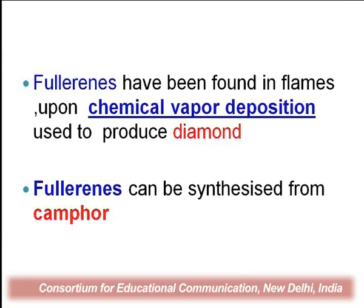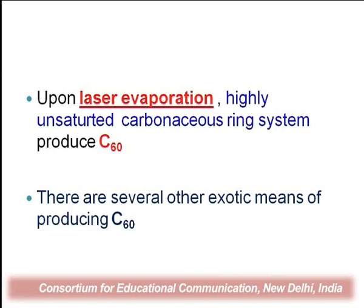Fullerenes have been found in flames and upon the chemical vapor deposition method used to produce diamond. From fullerenes we can produce materials using chemical vapor deposition. Fullerenes can also be synthesized from camphor. Laser evaporation of highly unsaturated carbon ring systems produces C80, and there are several other exotic means of producing C80 and other fullerene molecules.